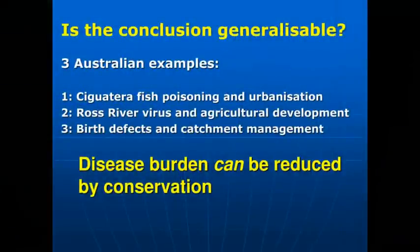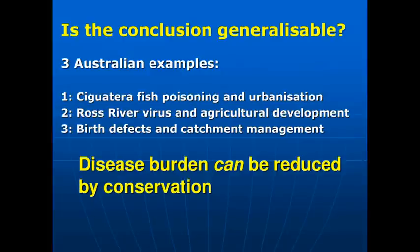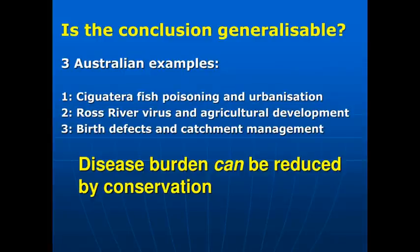So that's a third example. I've shown you three Australian case studies demonstrating the link between biodiversity and human health. What I haven't shown you is a great deal of international evidence — for example from Lyme disease — that supports the same story. Based on those studies and the international evidence, I feel very strongly that the conclusion is generalizable: disease burden can be reduced by conservation measures, at least in some situations.